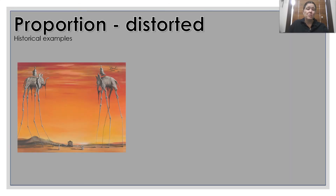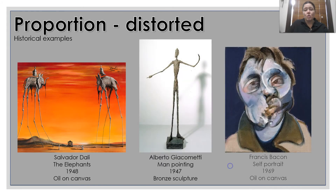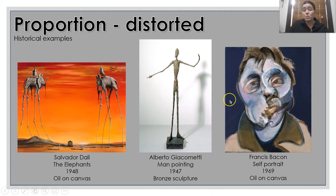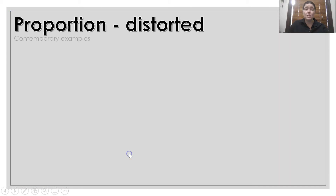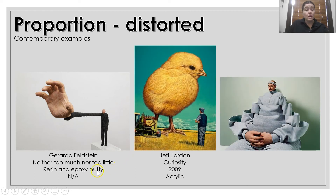Some examples of distorted proportion: we have Dali's work with the elephants with the elongated legs, Giacometti's elongated man as a sculpture, and the distortion of Bacon's face. Some other examples of distortion with proportion — you can see some different types of proportion being shown here.